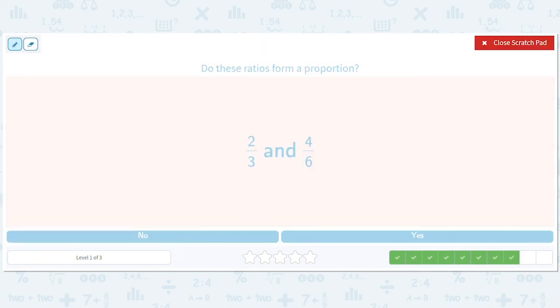How about two thirds and four sixths. Let's do this another way. Times two. Two times two is four. Three times two is six. So yes, they are in proportion.